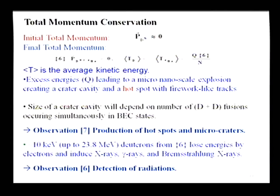And furthermore, let's say the lower charged particles flying out of this condensate will lose energy by electrons and so on. So it will create x-ray, gamma ray and bremsstrahlung depending upon what this average energy is. So that will explain observation six.